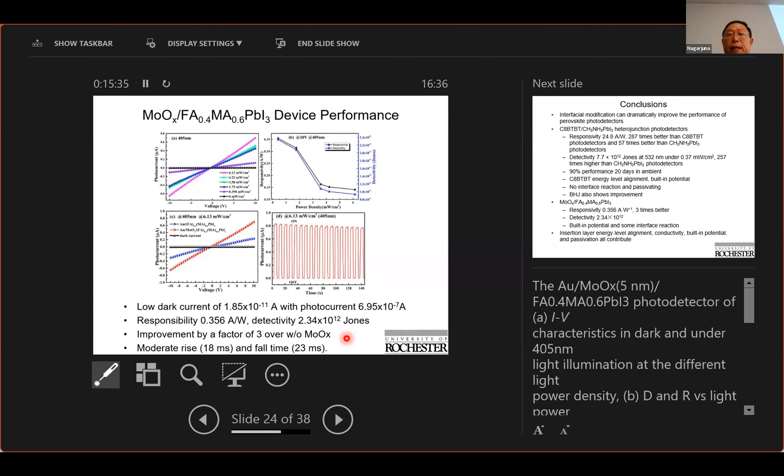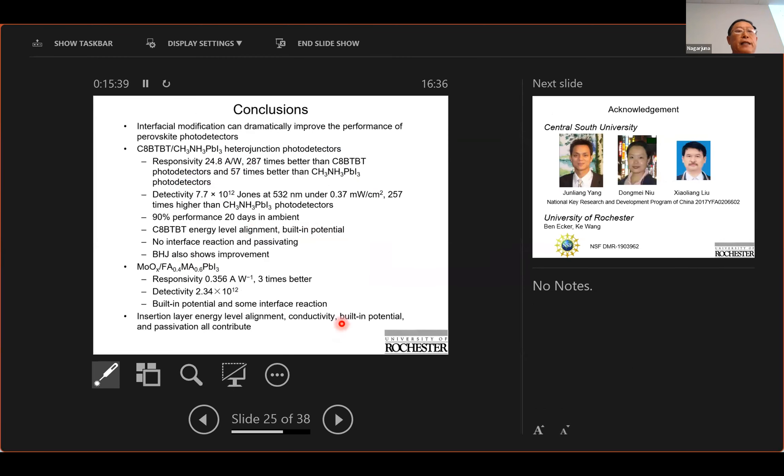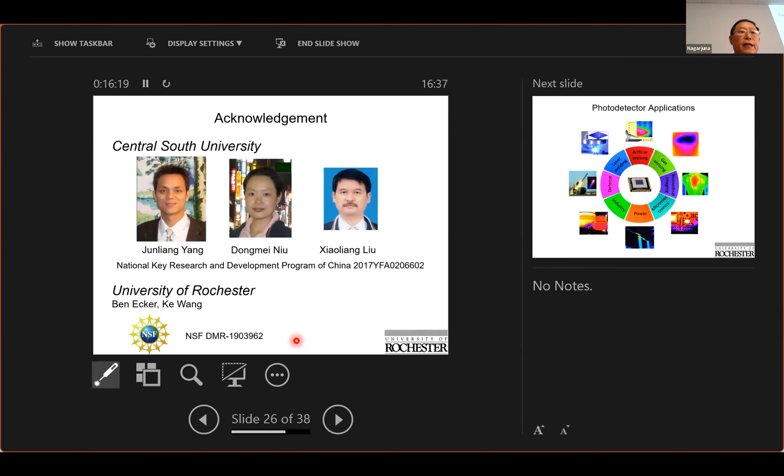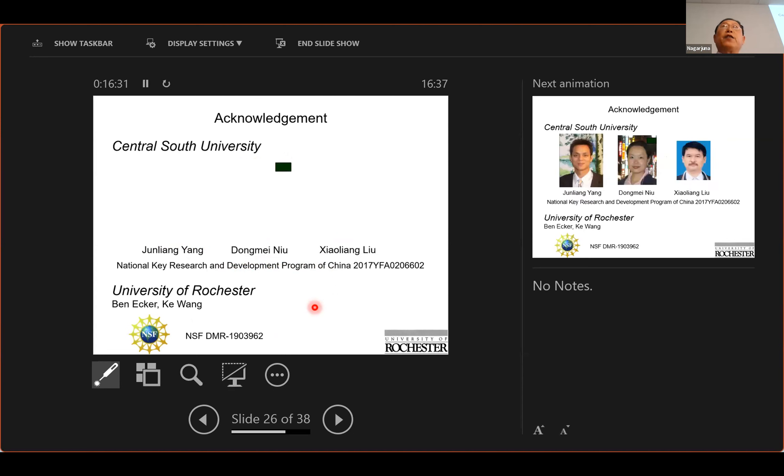So in conclusion, interface modification can dramatically improve the device performance and here are the numbers. And we see that surface modification has several factors which can improve device performance including energy level alignment and including conductivity, including building potential and passivation. They all contribute and each one contributes its own way and we can do different type heterojunction and then we can delineate the contribution of each. I'd like to acknowledge my colleagues at Central South University in China, Professor Junhang Yang, Professor Dongmin Niu and Professor Xiandong Liu, and then my student at University of Rochester. Thank you for your attention.